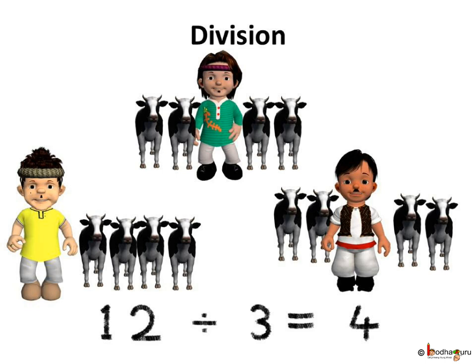We say 12 divided by 3 gives 4, and we write it as 12, the symbol for division, 3 equal to 4.